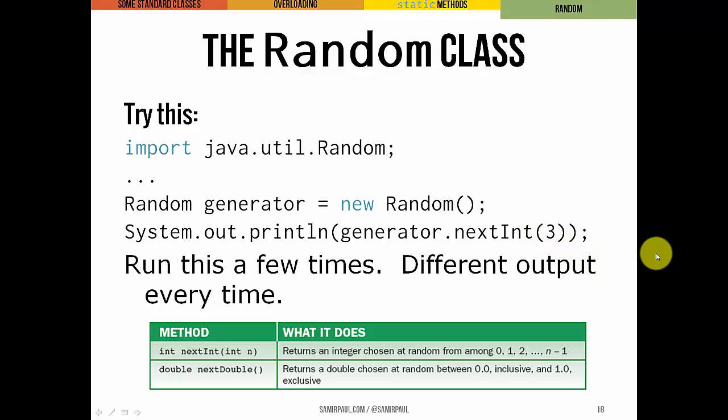It's going to return a random integer that's either 0, 1, or 2. If you run this program a couple of times in a row, you'll see you'll get different outputs.